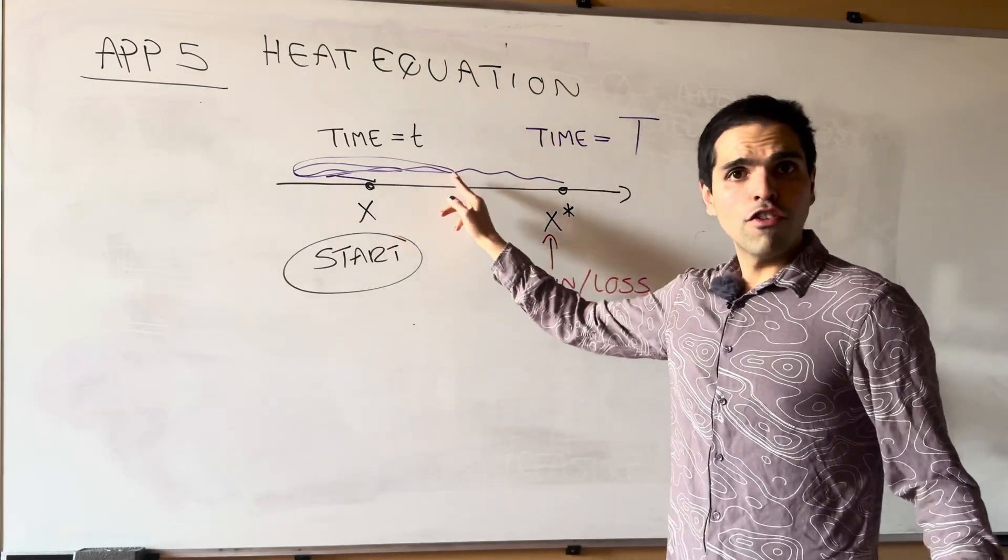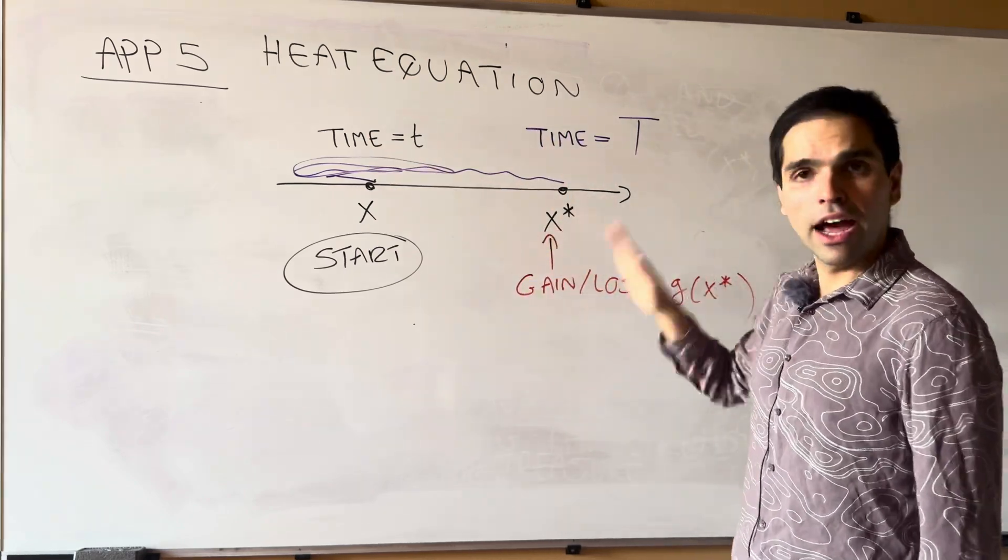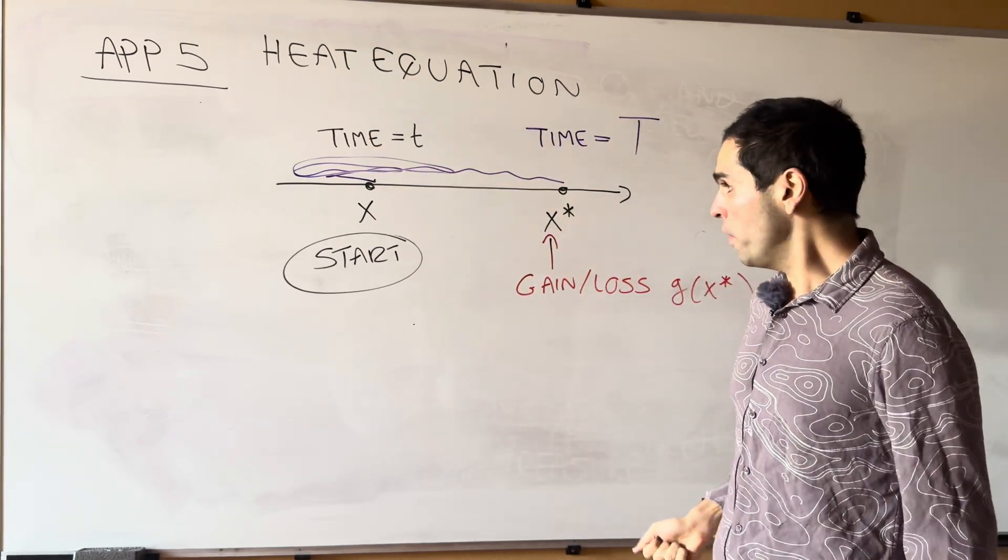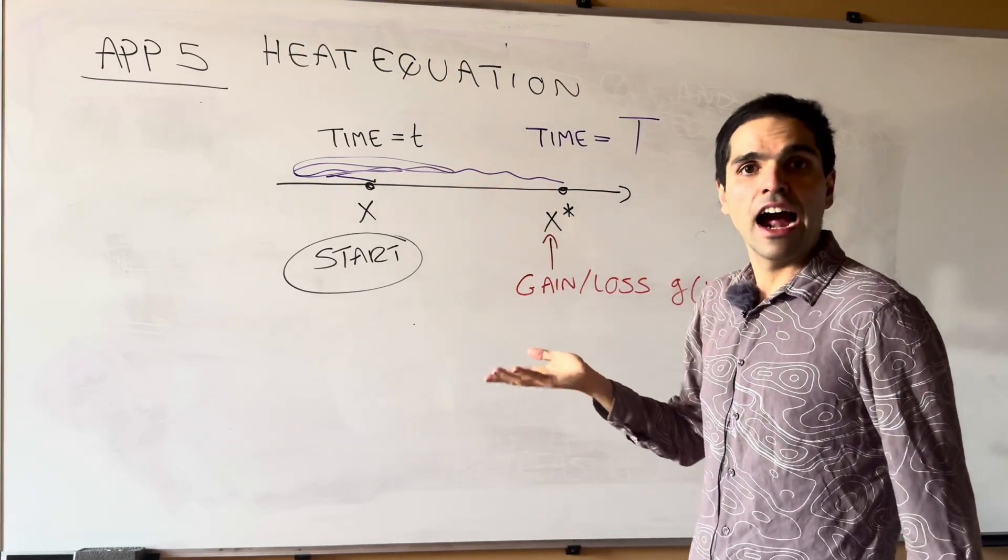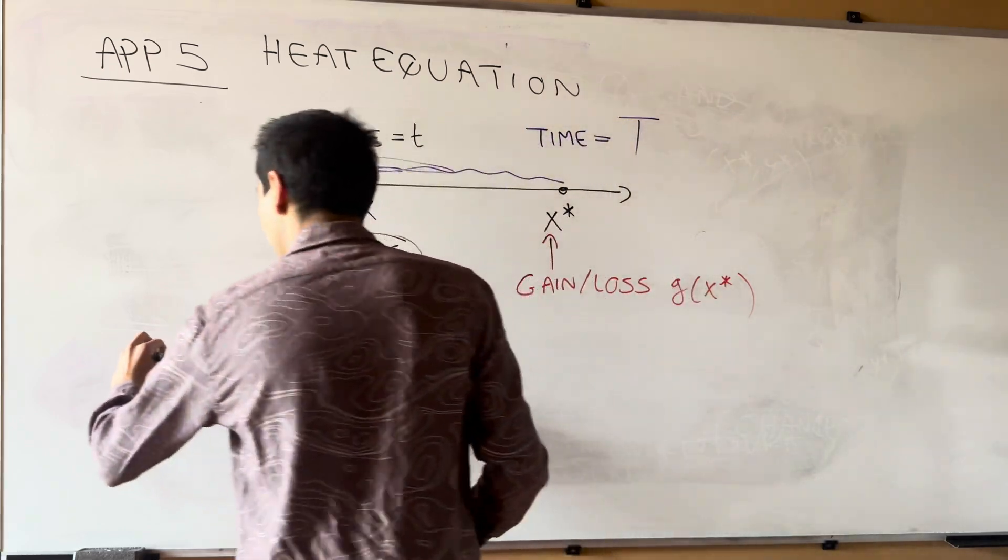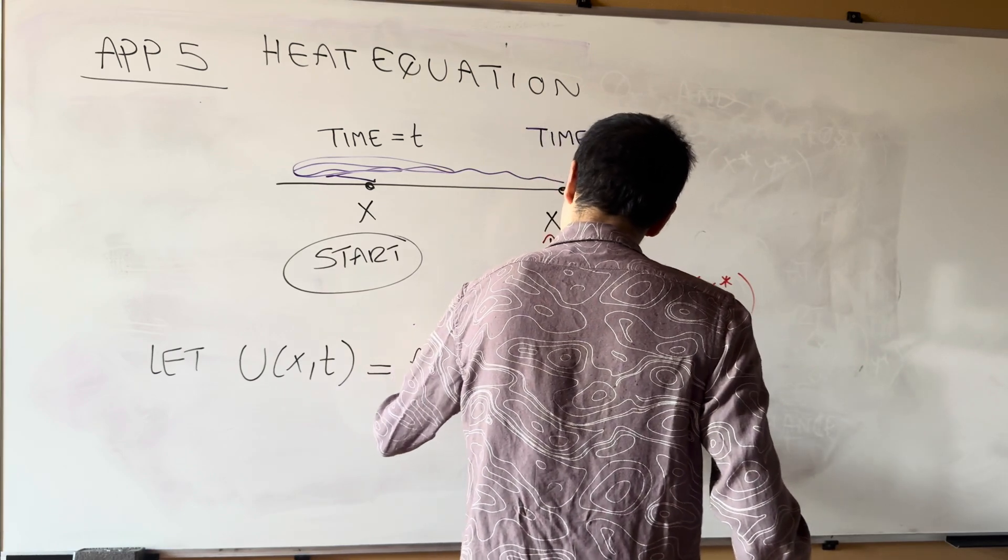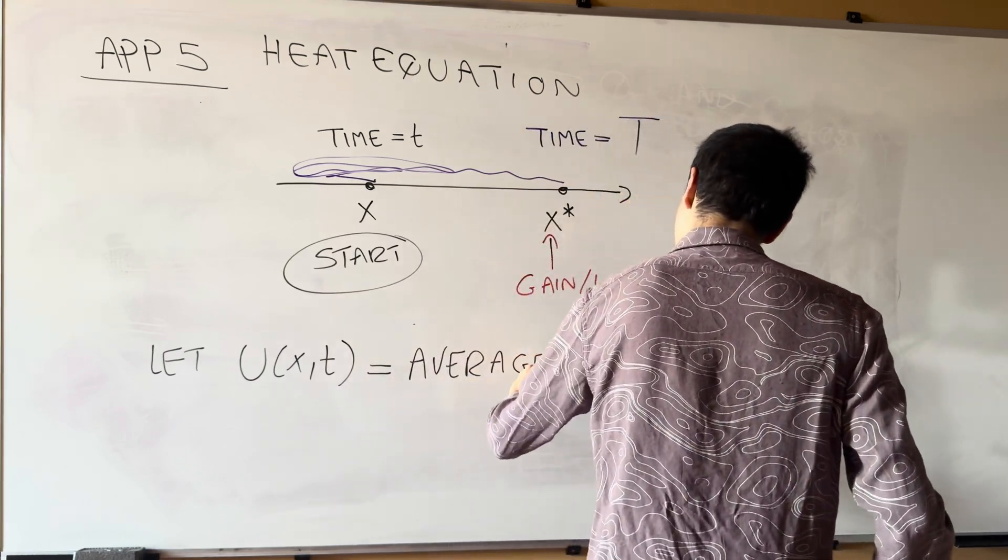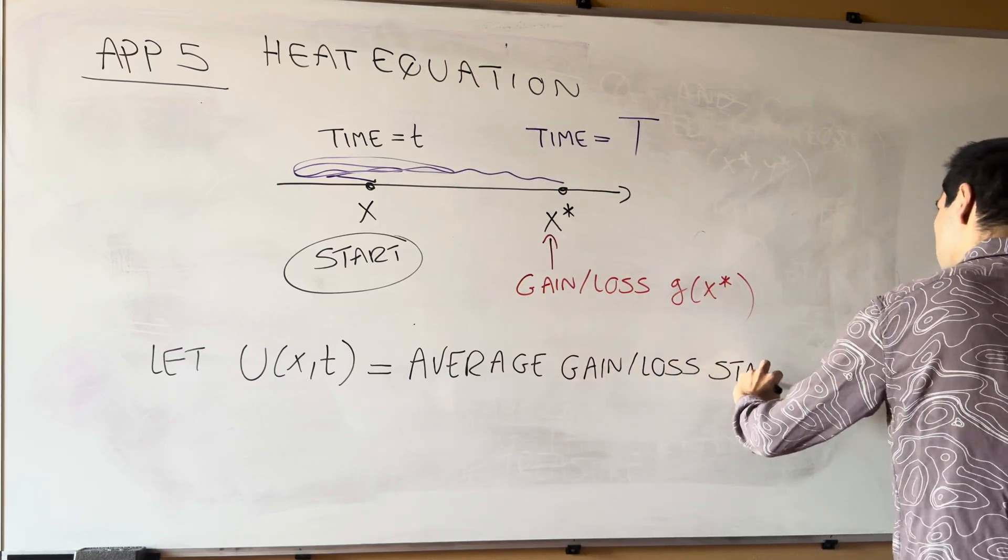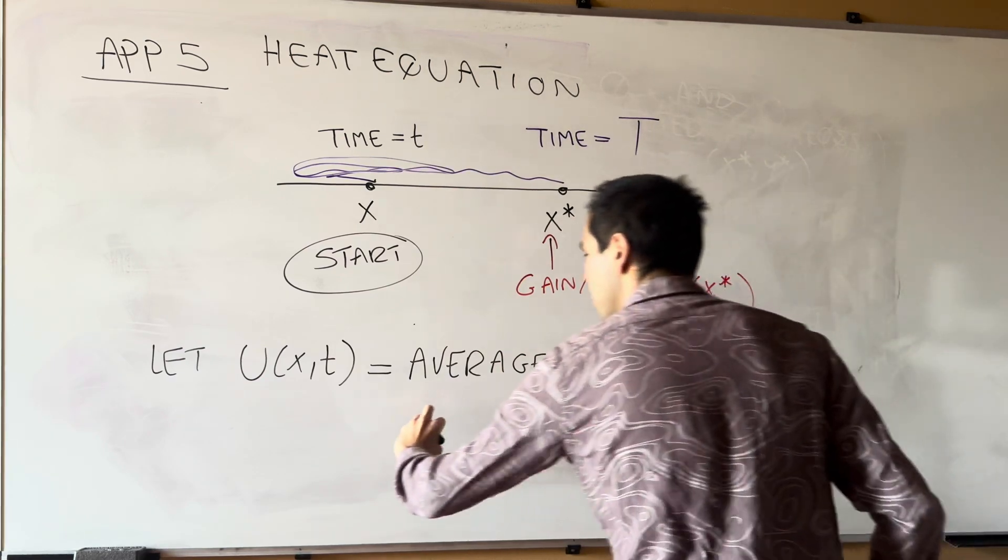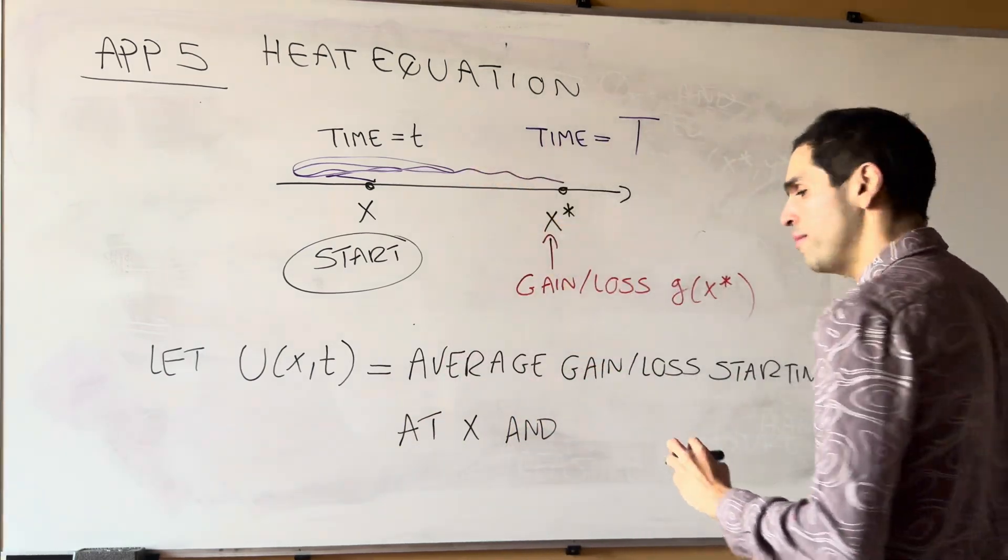So, for instance, think of a marathon runner running a sprint. And they arrive at the random position x star at a certain point. And in particular, once again, it makes sense to consider the average payoff. So, let u of x t be the average gain or loss starting at x and beginning time little t.